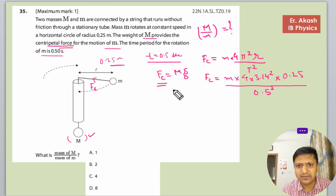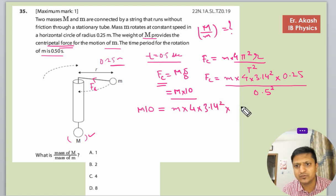So Mg is M into 10. Now we will equate: M into 10 equals small m into 4 into 3.14 whole square into 0.25 into 0.25.